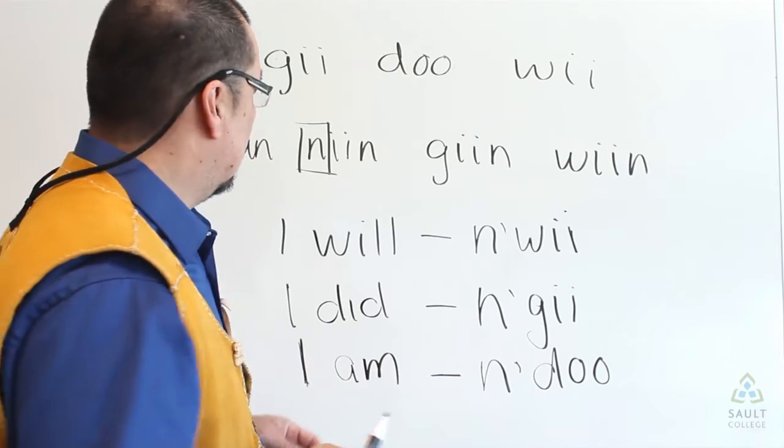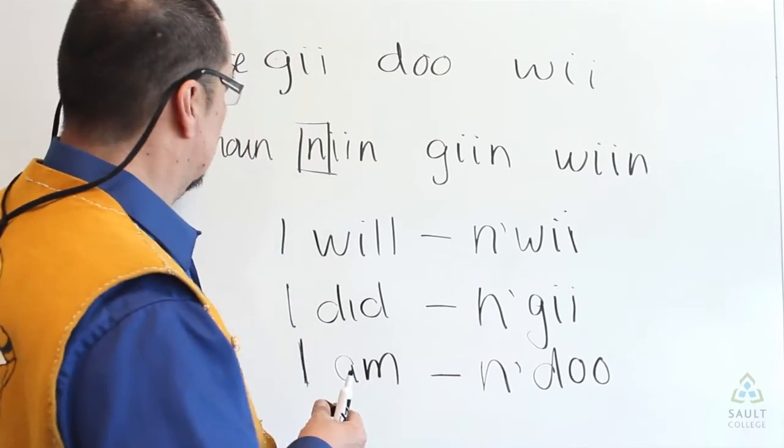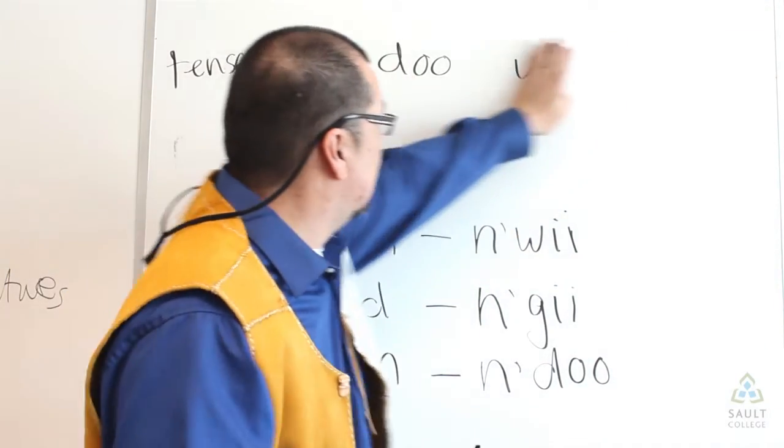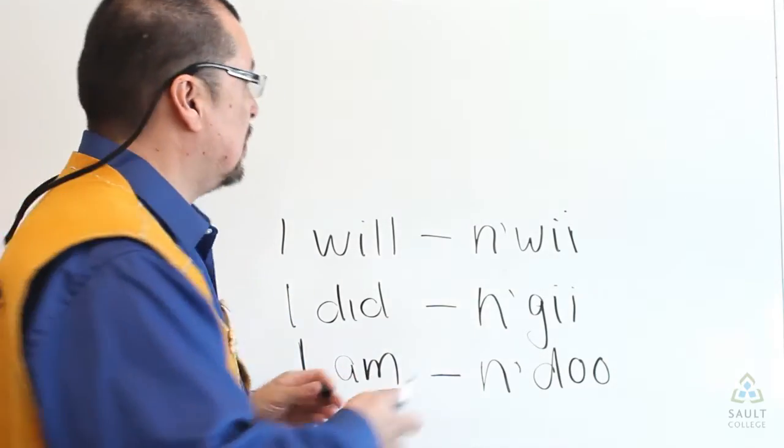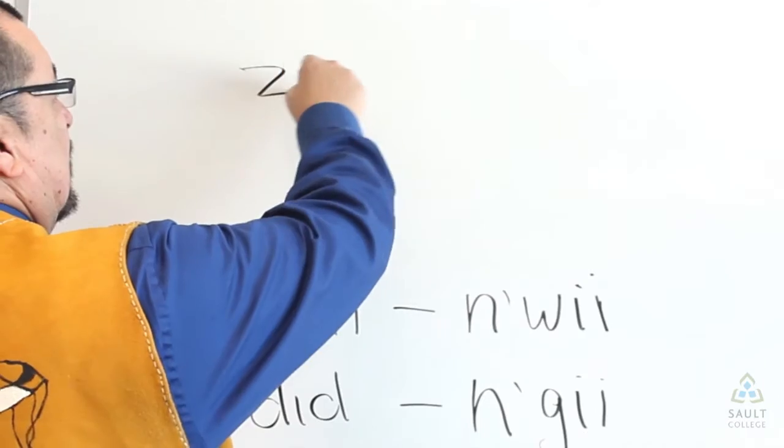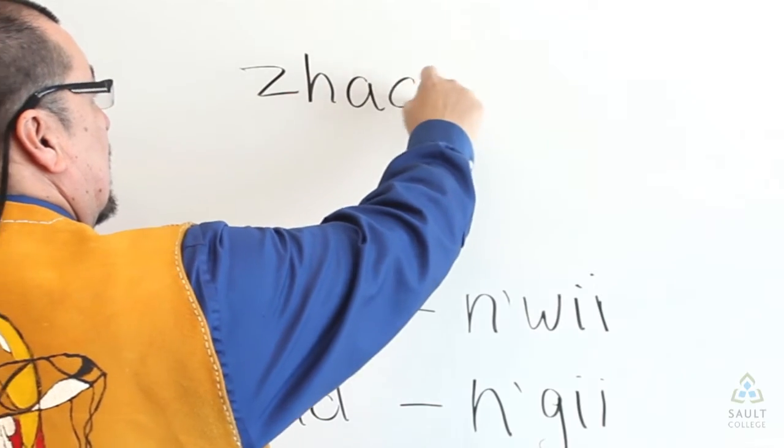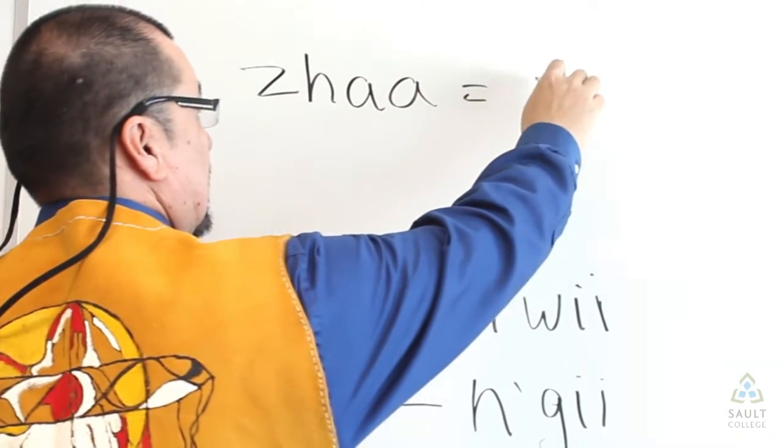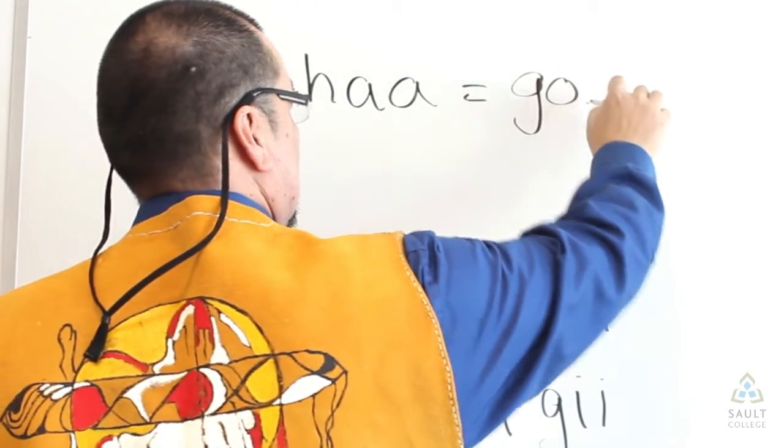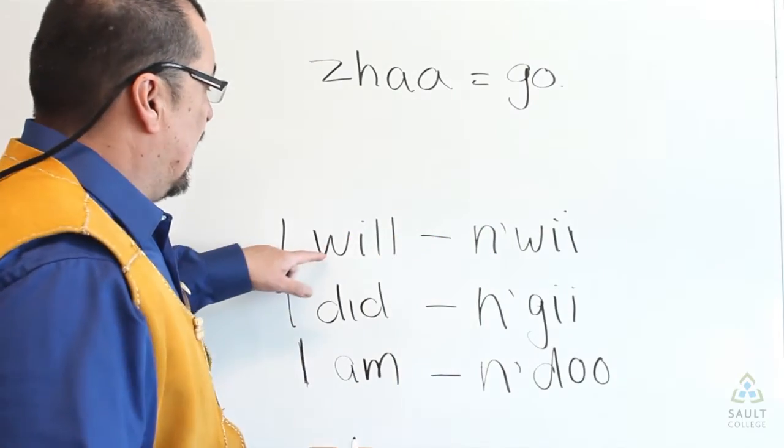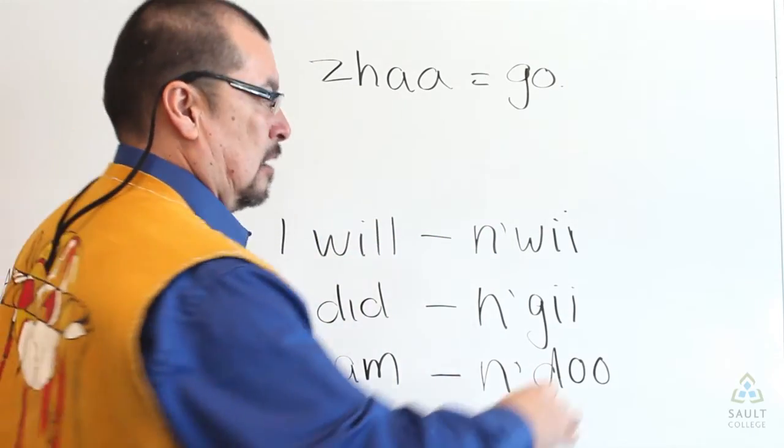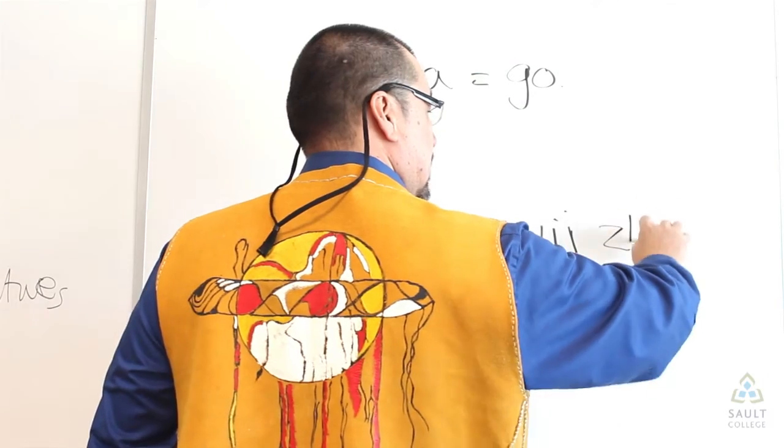For the sake of simplicity, I'll give you the example. This word here, jah, means go. I will go. I will go now becomes nwi jah.